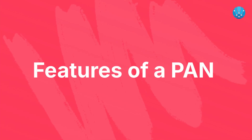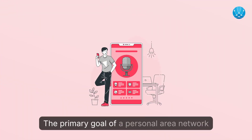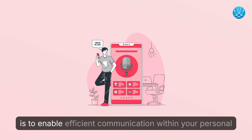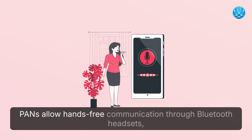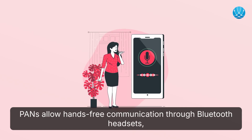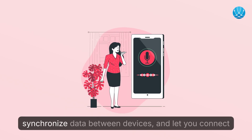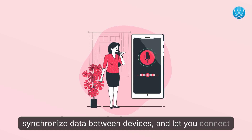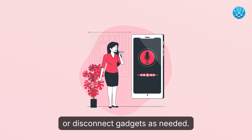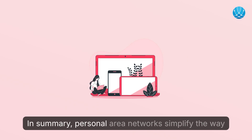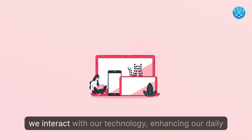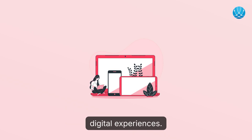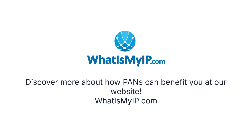The primary goal of a Personal Area Network is to enable efficient communication within your personal space. PANs allow hands-free communication through Bluetooth headsets, synchronize data between devices, and let you connect or disconnect gadgets as needed. In summary, Personal Area Networks simplify the way we interact with our technology, enhancing our daily digital experiences. Discover more about how PANs can benefit you at our website.